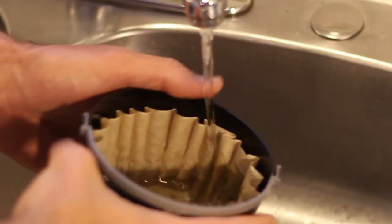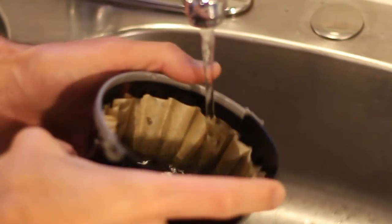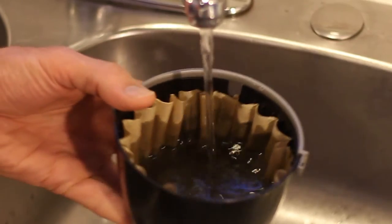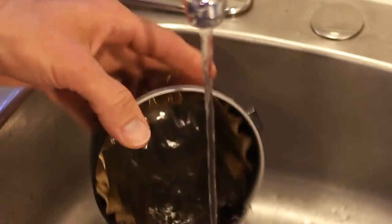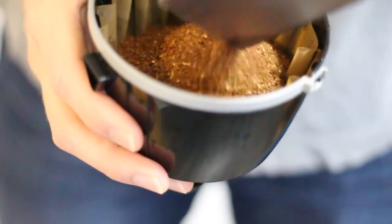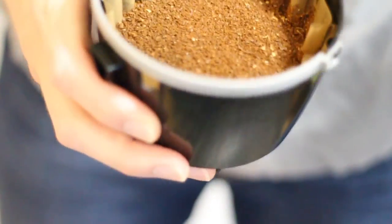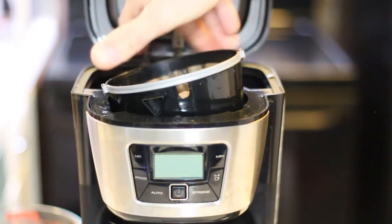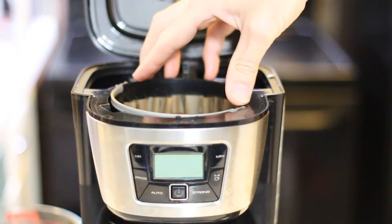I like to wet my filter first to get rid of any papery taste that would normally go into the coffee. You don't have to do that, but it's something I always advise. Then, put your coffee into the basket. Make sure it's level by giving it a little shake. Put that basket into the coffee maker, and we're off to the next step.